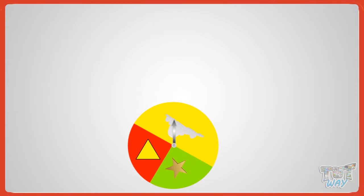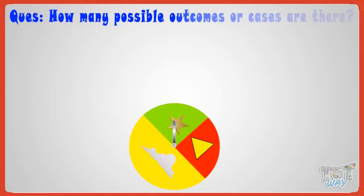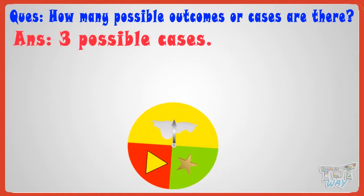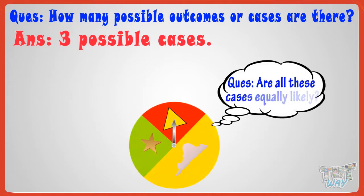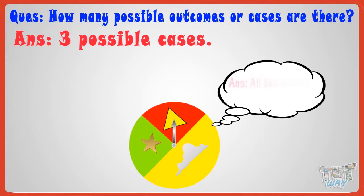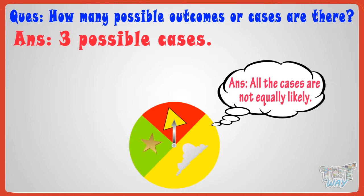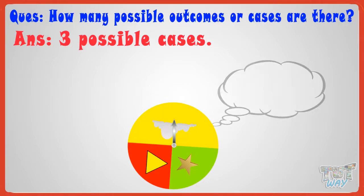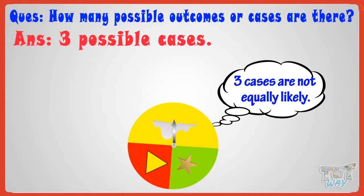Here we have another wheel. If I spin this wheel, how many possible outcomes or cases are there? Three cases are possible — the spinner may stop at cloud, star, or a triangle. And are all these cases equally likely? No, all the cases are not equally likely, as it is more probable that the spinner will stop at cloud, as it occupies more space on the spinner wheel. So the three cases are not equally likely.